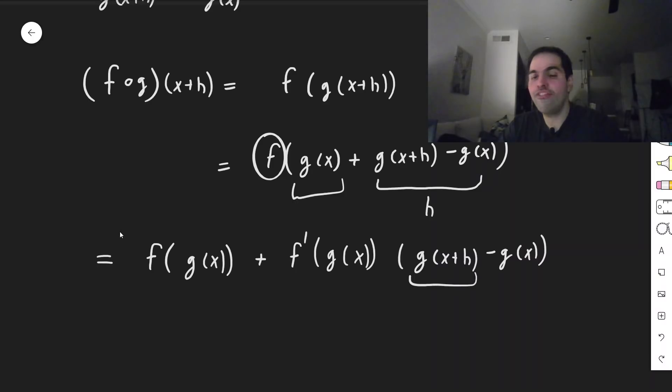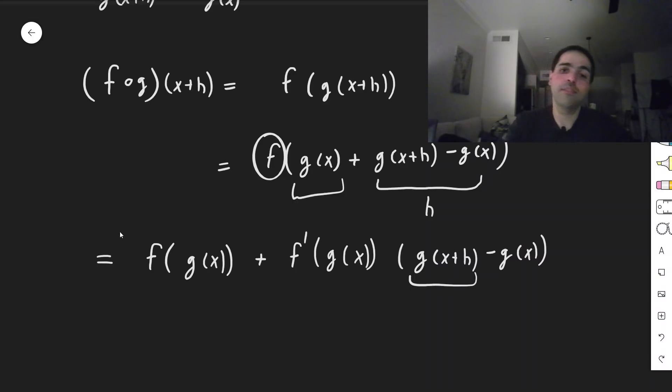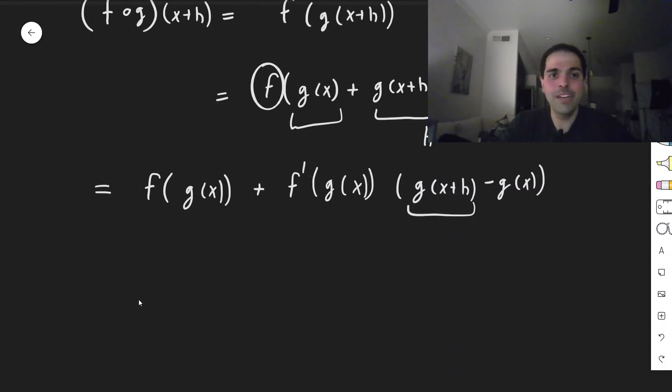But now, using the definition of g prime, we actually get that this is f composed with g of x, and then plus f prime of g of x, and then this becomes g of x plus h g prime of x minus g of x, and plus some junk.